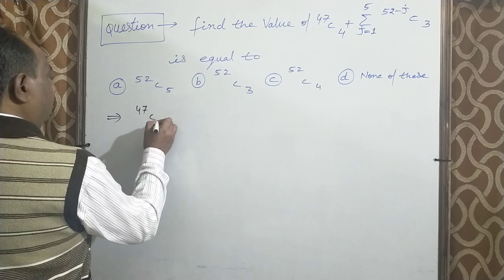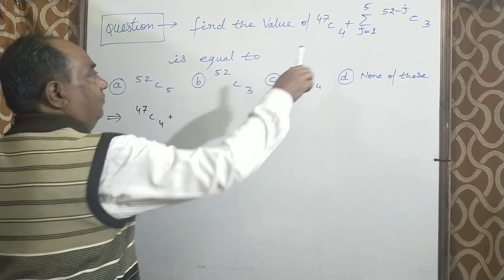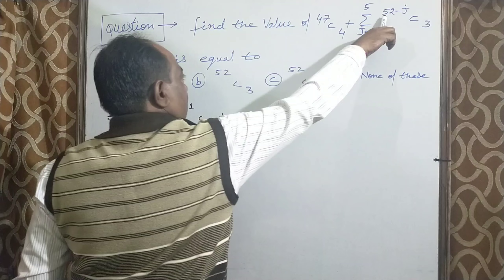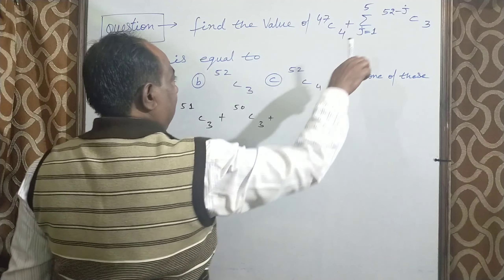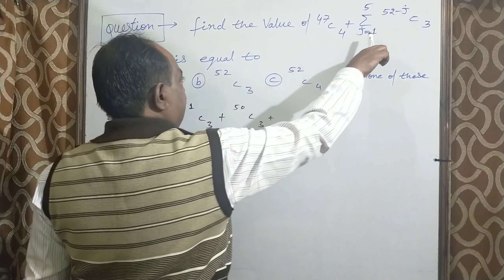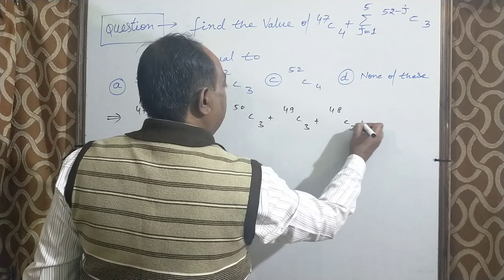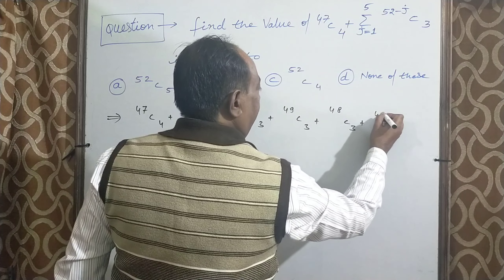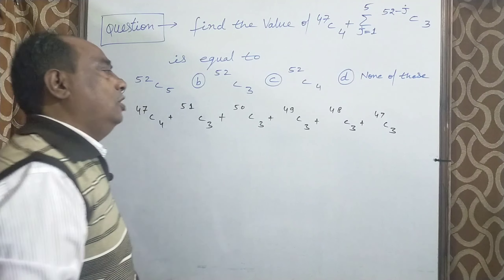Solution: 47C4, J equal 1 रखने पर 51C3, J equal 2 रखने पर 50C3, J equal 3 पर 49C3, plus J equal 4 पर 48C3, J equal 5 पर 47C3। तो हमने J की value 1 to 5 तक रखी।